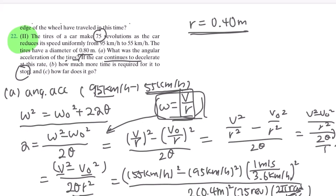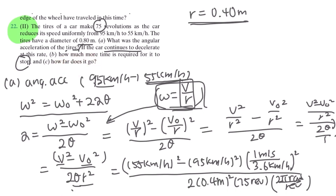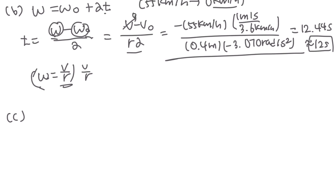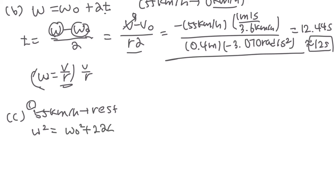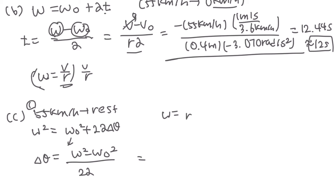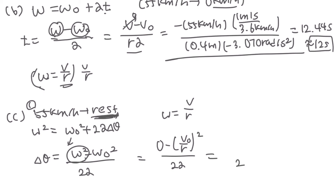Now let's move on to the last part: finding how far the car will go. We need to divide this into two parts. First, we find the total angular displacement of the tires as the car slows from 55 km/h to rest. Using omega squared equals omega-initial squared plus 2 alpha theta, and organizing for theta, we get theta equals (omega squared minus omega-initial squared) divided by 2 alpha. Because the final angular velocity is zero, that term drops out, leaving only the initial velocity term.